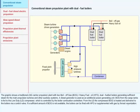If a sufficient amount of BOG is not available, the boilers can be fired with HFO or supplemented with gas by forced vaporization.